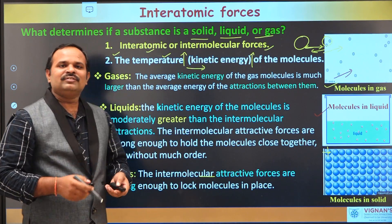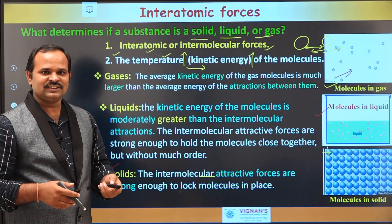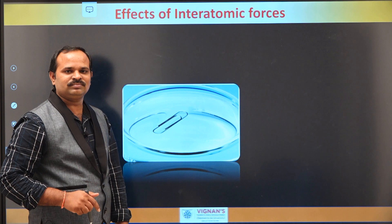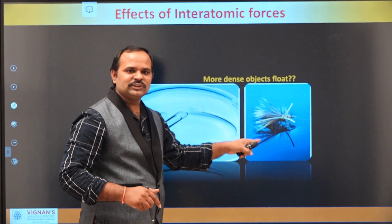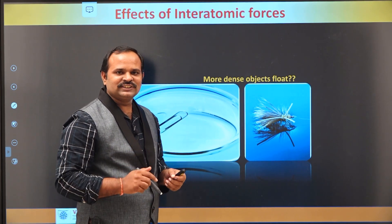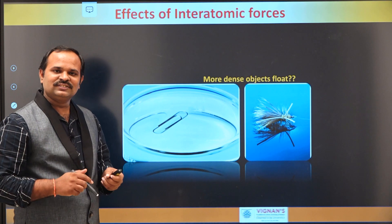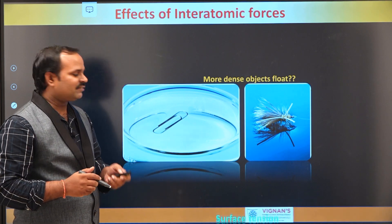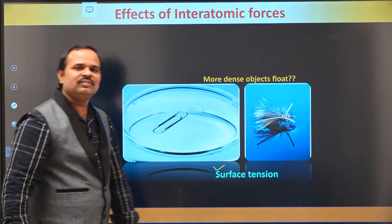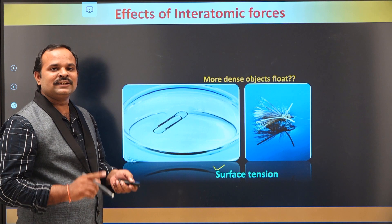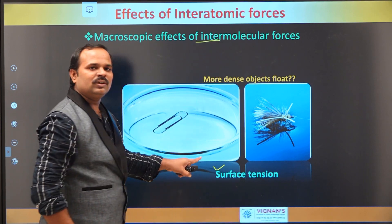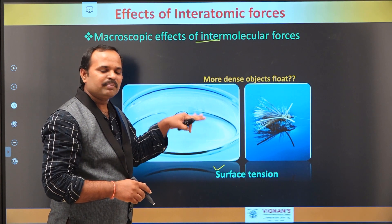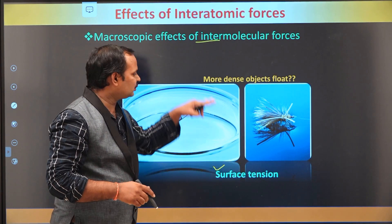Let us see if interatomic forces really exist in nature. You can see in this picture there is a small pin which is floating in the water, and in another picture there is a small fly floating in the water. Dense objects cannot normally float in water, but in this case they do — because of the property of surface tension of the water or liquid. Surface tension arises because of interatomic forces between the atoms on the surface of the water, making these objects able to float.